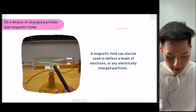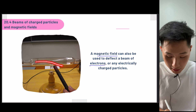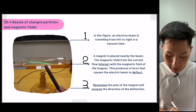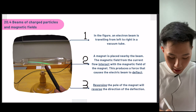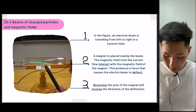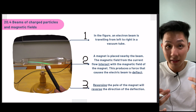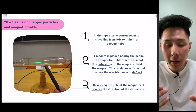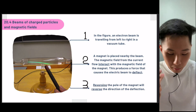The last part of the chapter is beams of charged particles. A magnetic field can be used to deflect a beam of electrons — this green color here is basically showing a beam of electrons flowing. We know that the flow of electrons creates a magnetic field, so if you put a magnet beside it, you create some movement — either attracting or repelling. In the figure, the electron beam is traveling from left to right, and the magnet is placed close to the beam. The magnetic field of the current interacts with the magnetic field of the magnet, causing the electron beam to be deflected. If you were to reverse the pole of the magnet, the electron beam would likely go upwards instead, because you are creating a different polarity.